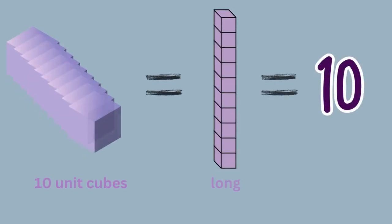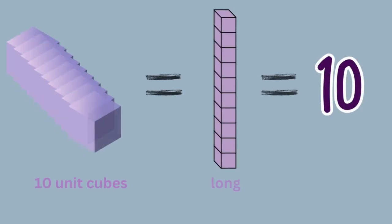Now, if we stack 10 of these unit cubes together, we get a long, thin block called a long. The long represents 10 units. When we have 10 units, we can trade them for a long. This idea of trading 10 units for one long is the foundation of our base 10 number system.